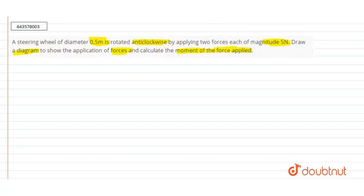So in this question, we have a steering wheel having a diameter 0.5 meter. Suppose this is the center of the diameter. We know that the radius is the half of the diameter, so radius comes out to be 0.25 meter.